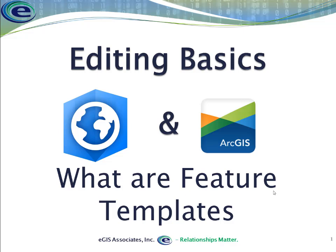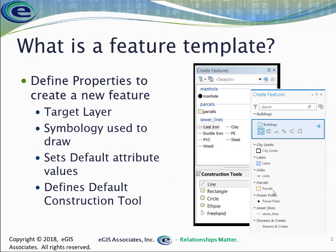A feature template is something that we access that allows us to create a new feature because it defines all of the properties we need to create that new feature. Those properties include things like the target layer — what layer is the new feature being created on — what symbology is used, what default attribute values we want to assign, and what default construction tool we want to use. All of those properties are defined as part of the feature template.